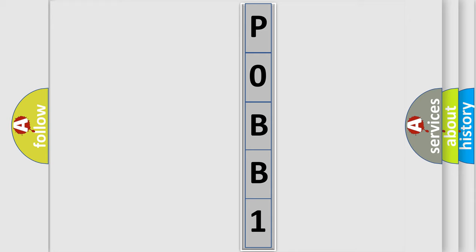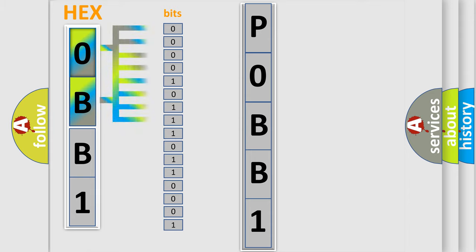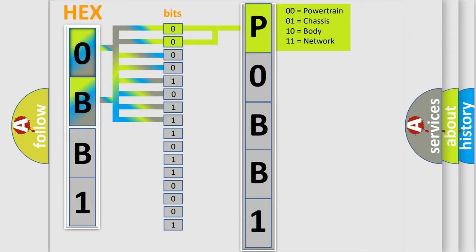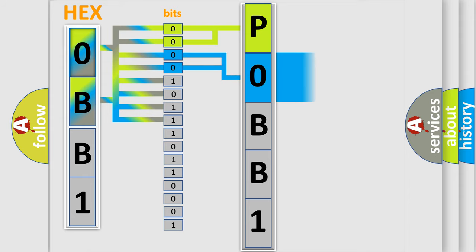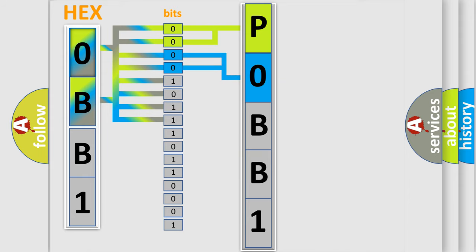The error code is split into two bytes consisting of 16 bits. One bit is the basic unit that each computer works with. The bit has two logical states: zero, low level, and one, high level. By combining the first two bits, the basic character of the error code is expressed. The next two bits determine the second character. The last bits of the first byte define the third character of the code.